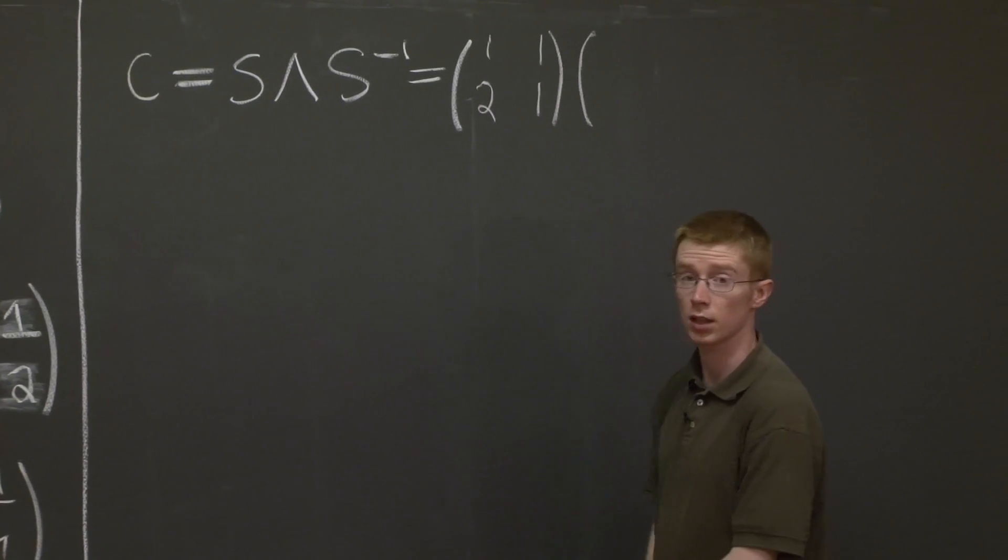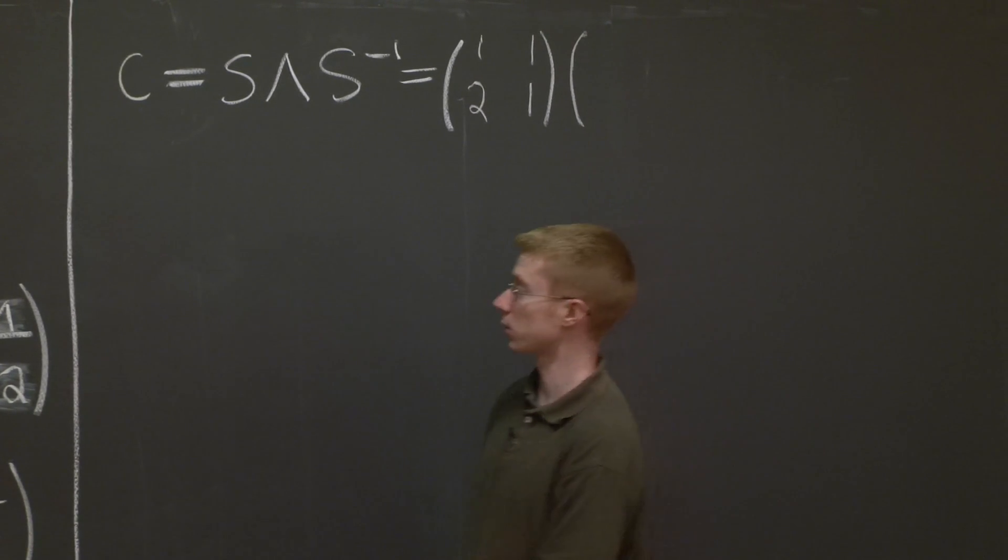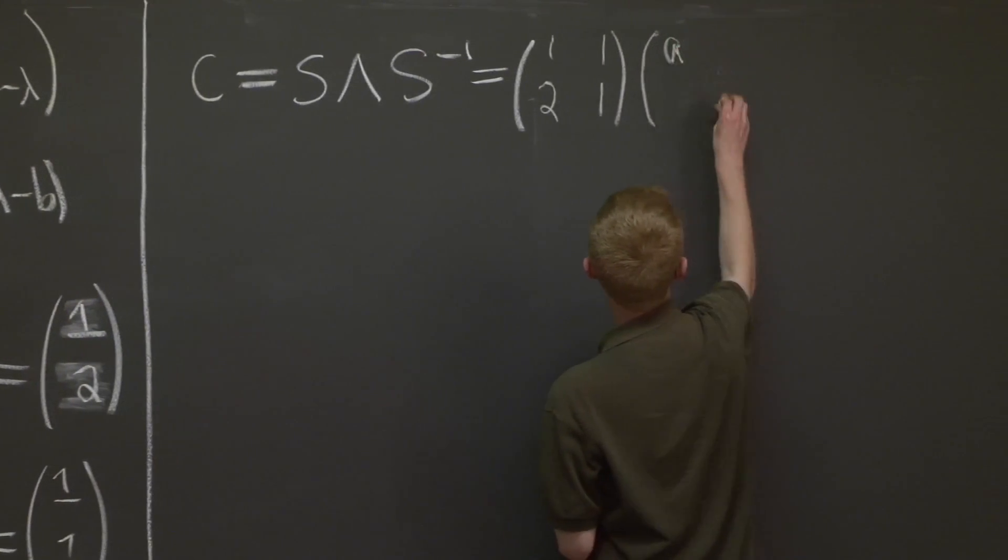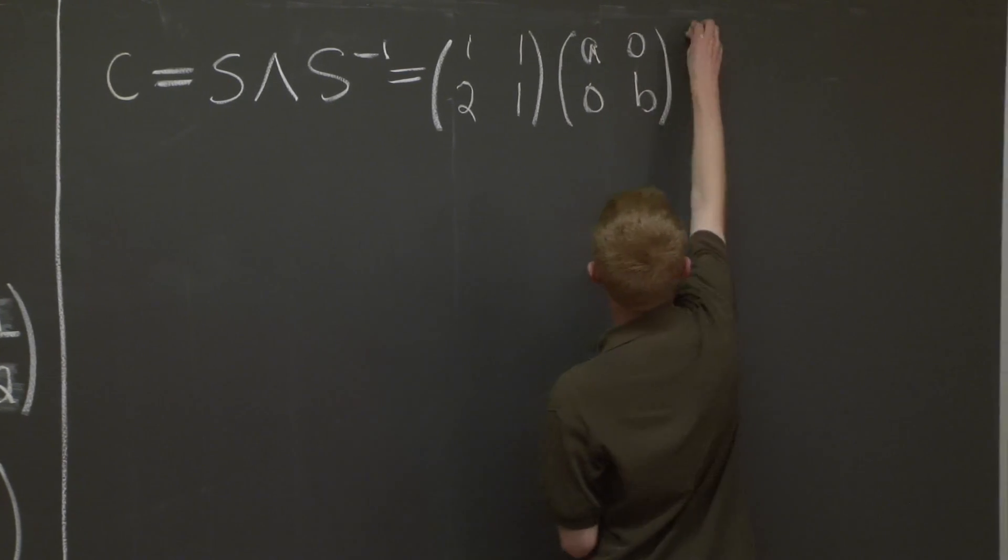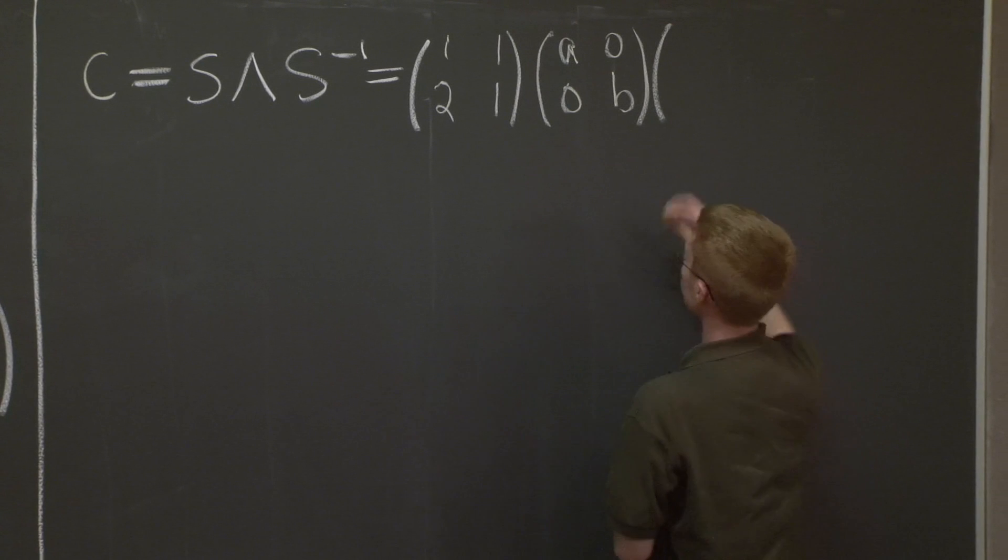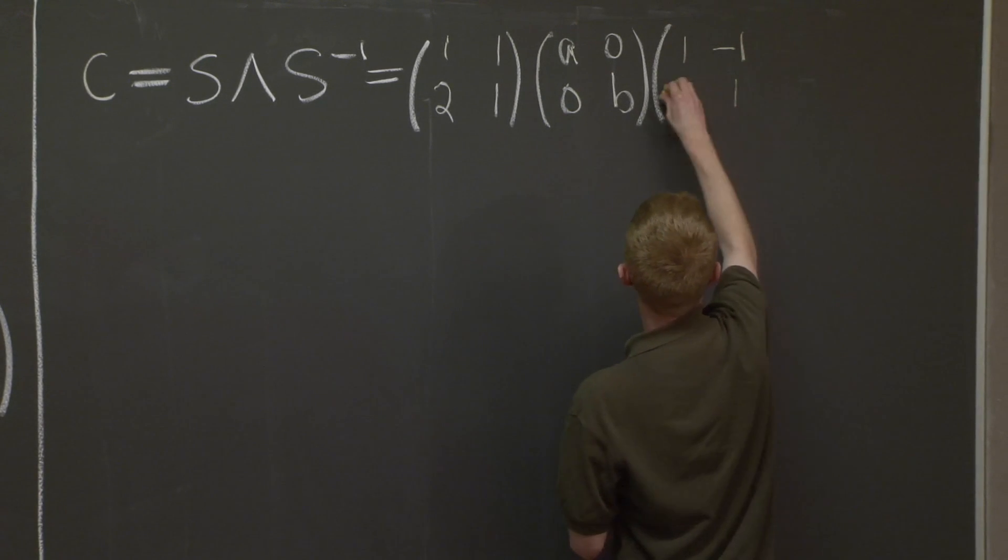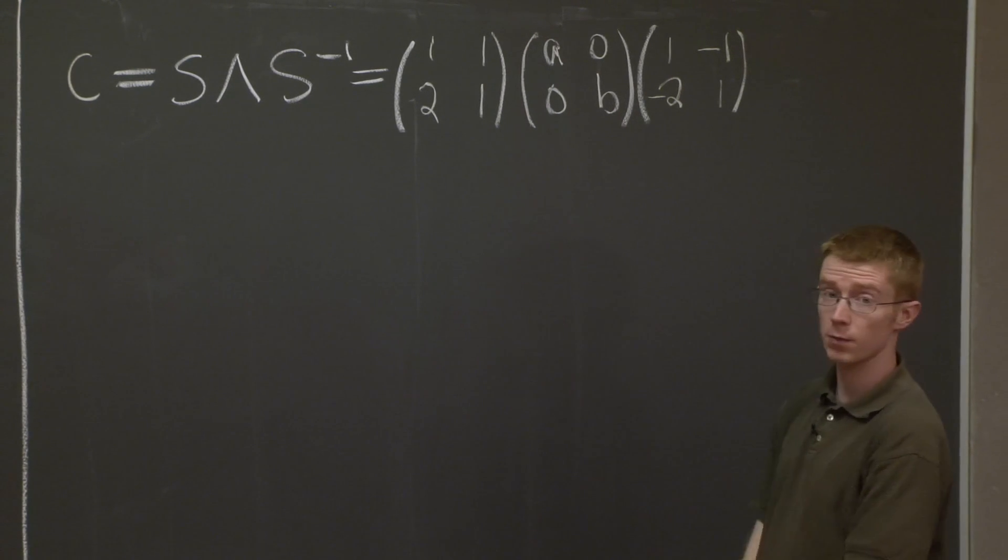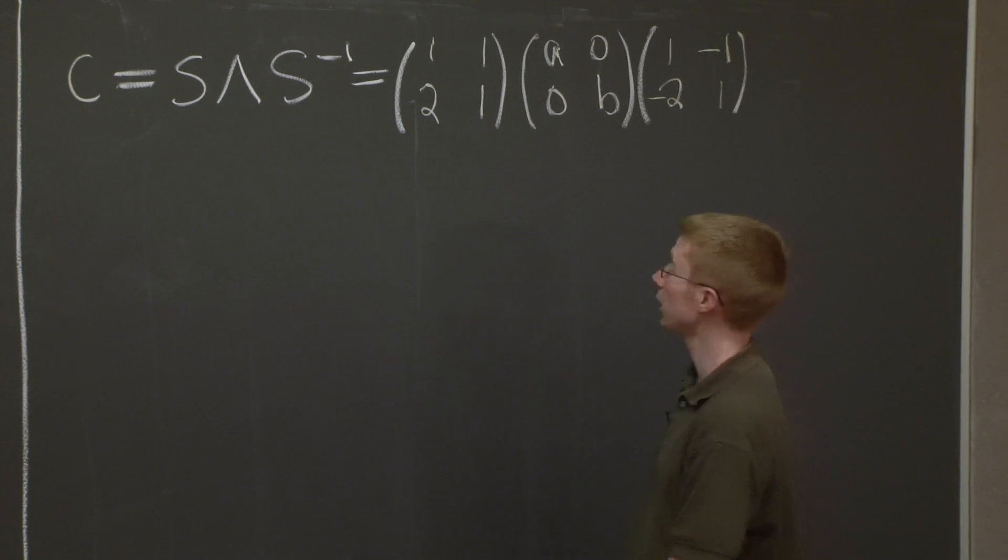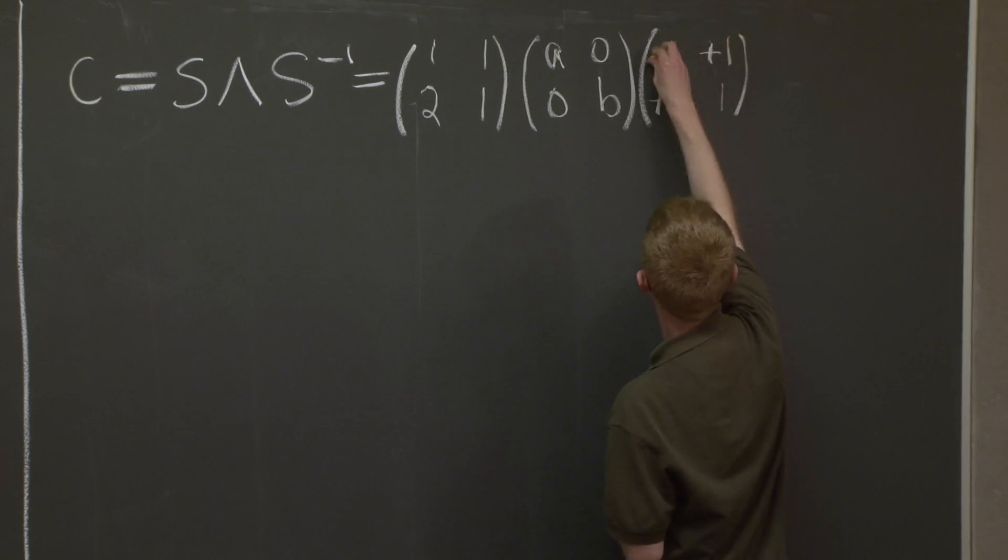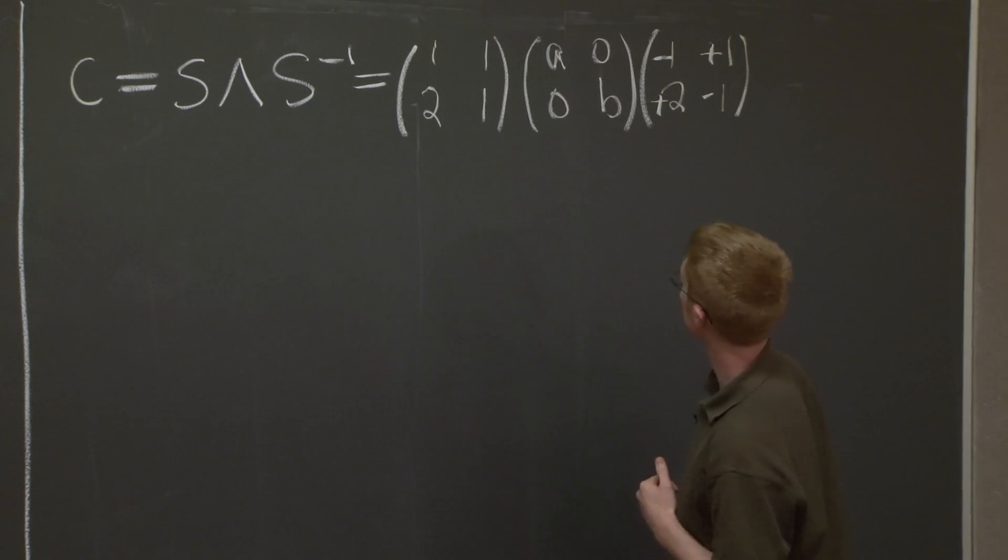Now what is lambda? Lambda is the matrix of eigenvalues, right? So it's just A and B. Those are the diagonal entries of my lambda matrix. And then we just find S inverse. So we just take negative signs here, and recall that we have to divide by the determinant, and the determinant of this matrix is just negative 1. So we just change the signs there.